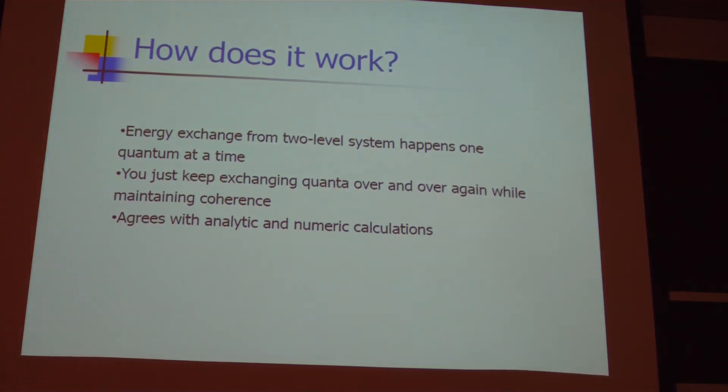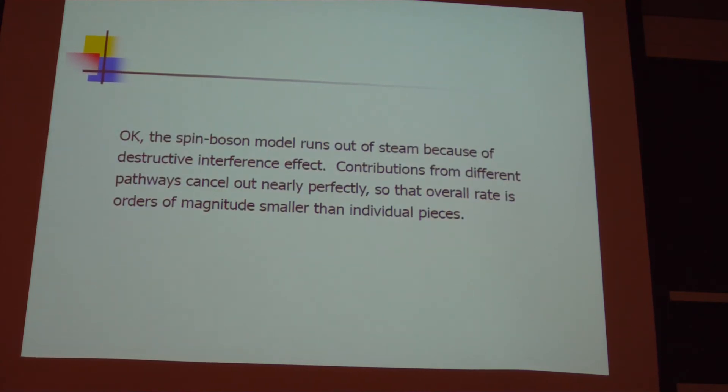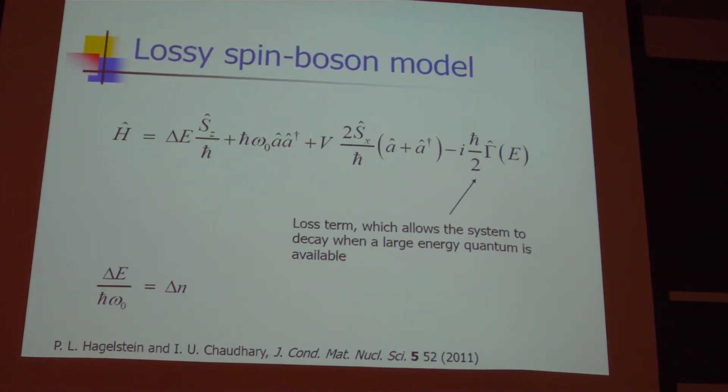How does it work? We discussed this last time. We exchange one quantum at a time. And you can end up exchanging 17 quanta one at a time as long as you maintain coherence. We discussed why it runs out of steam. It runs out of steam because of destructive interference.